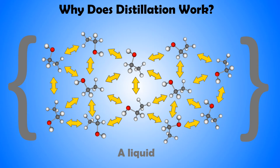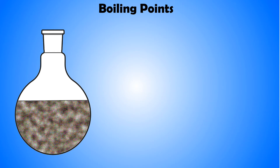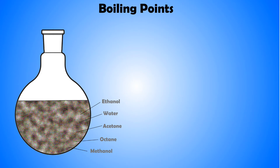Basically, the stronger the intermolecular forces of a chemical, the harder it is to separate its molecules from one another. The ease of separation of various elements is referred to as their volatility. Highly volatile substances have weak intermolecular forces and so they vaporize easily, and vice versa. When we put a reactant, wort, or mash into the still, it is a mixture of multiple constituents. By heating the whole reactant to a specific temperature, we can evaporate all chemicals with a boiling point equal to, and less than, that point.